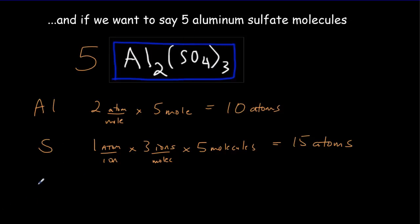And then for the oxygen, we've got four atoms in every ion. And then we've got three ions in every molecule. And we've got five molecules. So we're going to end up with 15 times four, 60 atoms of oxygen.